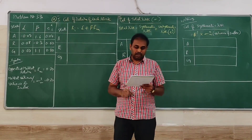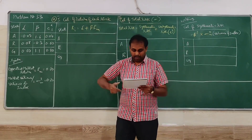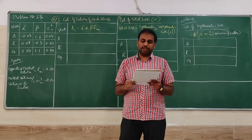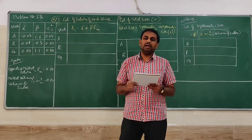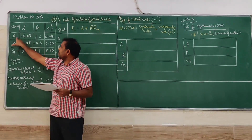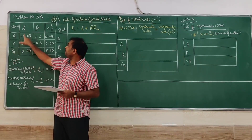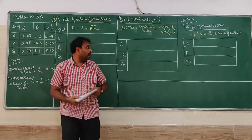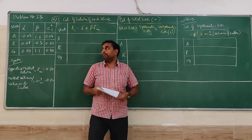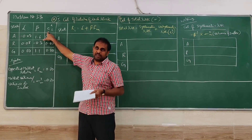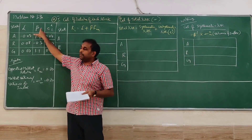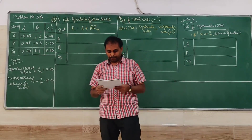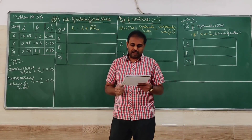We will move on to Law No. 33 — this can be a 10-mark question. The problem gives market information regarding stocks A, R, and G in a table. We have the alpha value, beta value, and EI² which is the unsystematic risk. By looking at the symbols you need to know what each signifies: unsystematic risk, beta formula, and alpha formula.